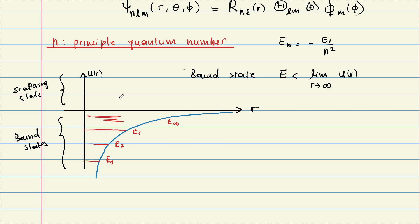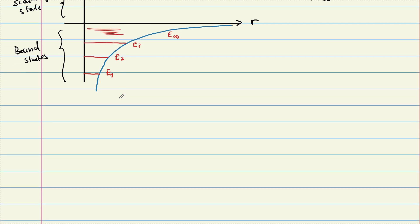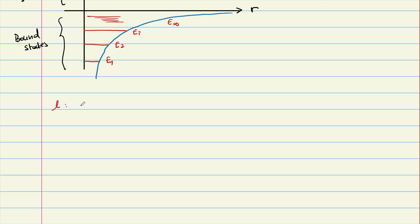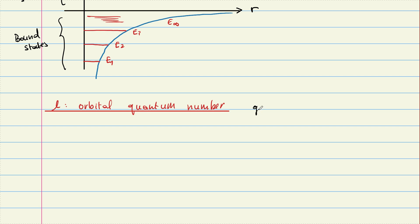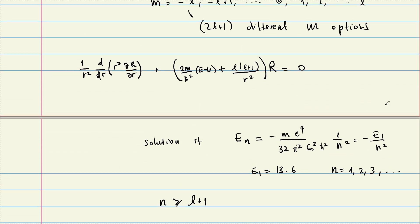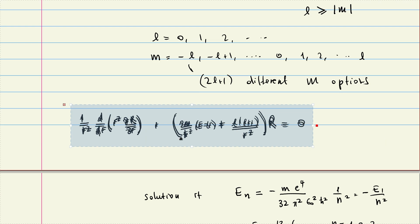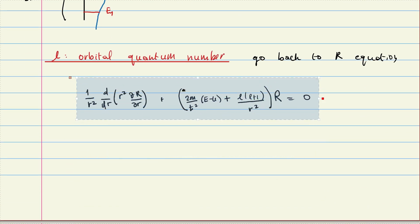So the principal quantum number is associated with the energy. The second quantum number is l, and this is what we call the orbital quantum number. To understand it, we have to think more carefully and go back to the radial equation.